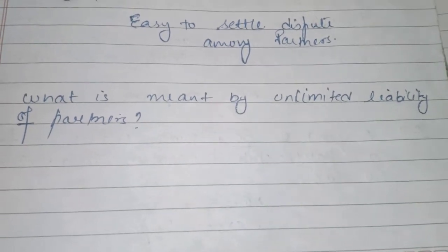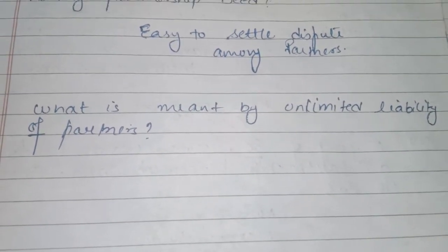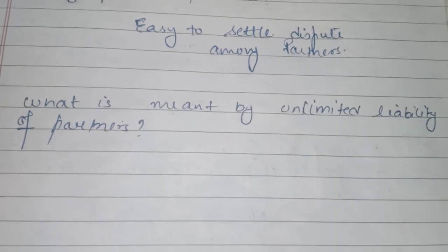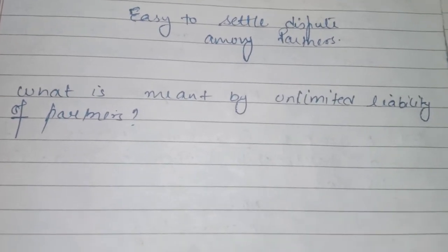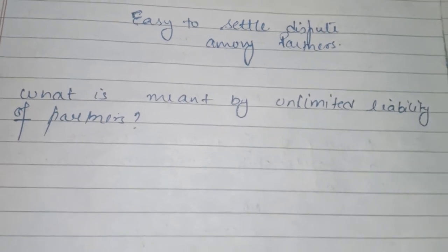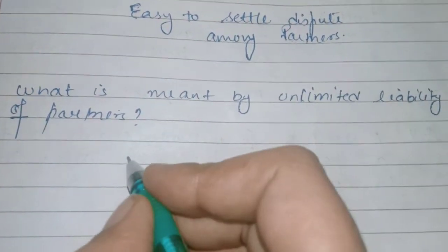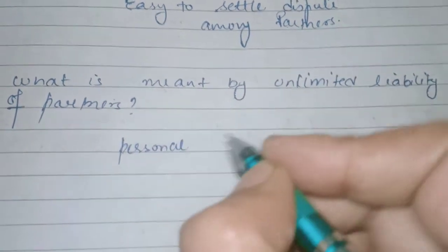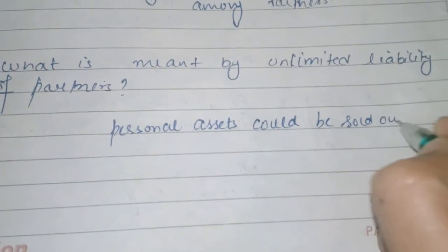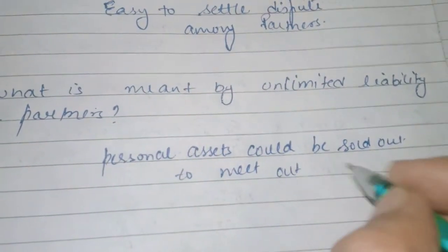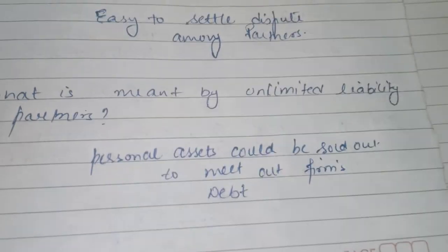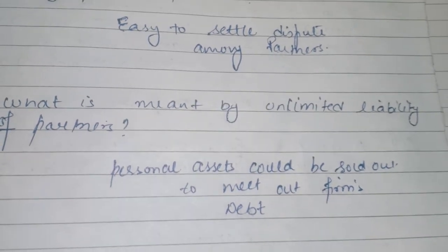What is meant by unlimited liability of a partner? This was also studied in Plus One business studies. When you have taken a loan from creditors — bank loans, etc. — you have to pay them back. If the firm's assets are insufficient, then personal assets of the partners could also be sold out to meet the firm's debts. When personal assets are also sold to fulfill firm debts, that liability is called unlimited liability.